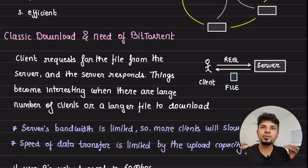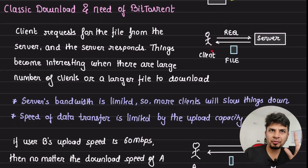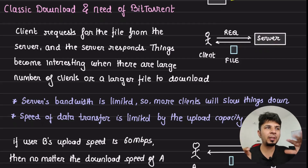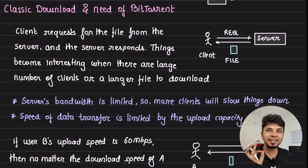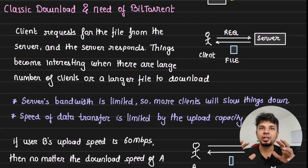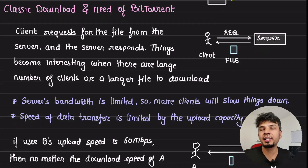First, let's understand how we classically download files from the internet, and why do we even need something like BitTorrent. Your client requests a file from the server, the server has the file and it responds — pretty simple download flow. You can do it over HTTP, FTP, and so on. But things become very interesting when your download size is a little larger, for example 300 MB. If you want to download a latest version of Debian OS or Ubuntu, the file size is large, so downloading that one big file from one server gets tricky and slow.